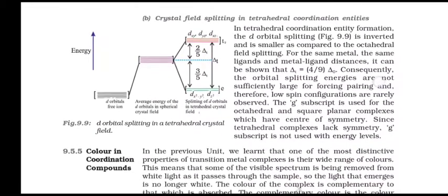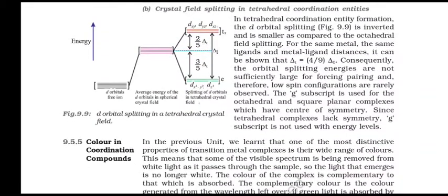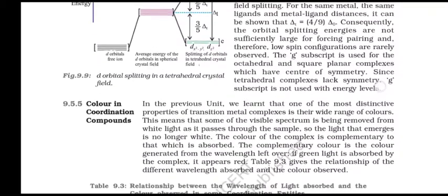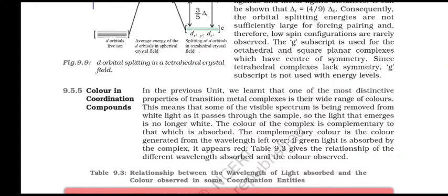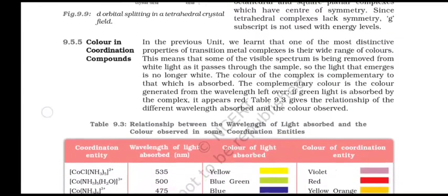Crystal Field Splitting in Tetrahedral Coordination Entities: In tetrahedral coordination entities, the d orbital splitting is inverted and smaller compared to the octahedral field splitting. For the same metal, ligands, and metal-ligand distances, delta-t equals 4/9 delta-o. Consequently, the orbital splitting energies are not sufficiently large to force pairing, and therefore low spin configurations are rarely observed. The g subscript is used for octahedral and square planar complexes which have a centre of symmetry; since tetrahedral complexes lack this symmetry, the g subscript is not used.